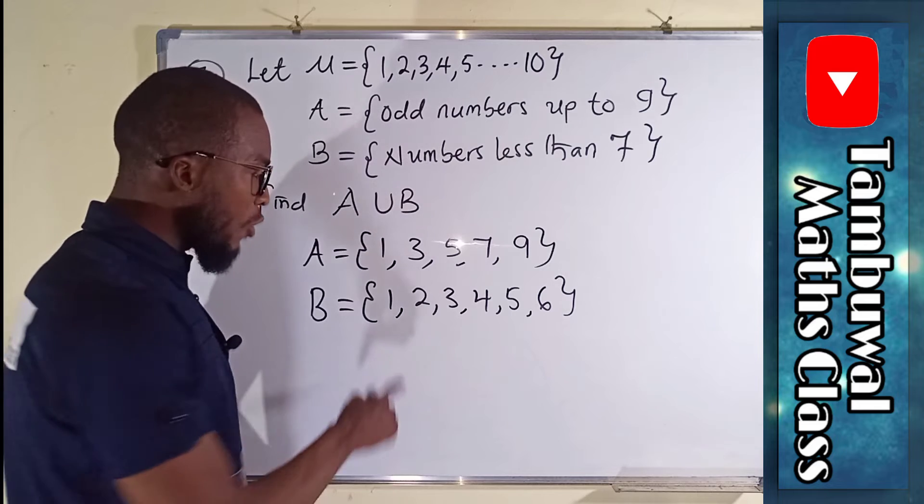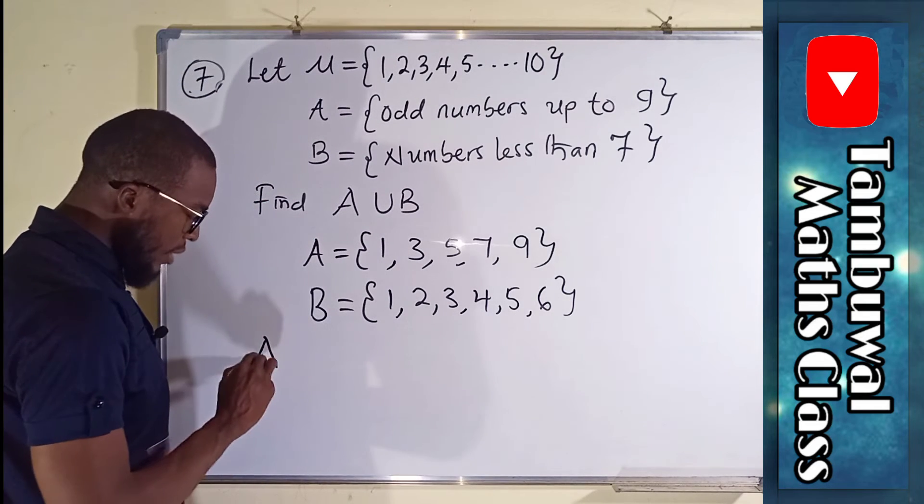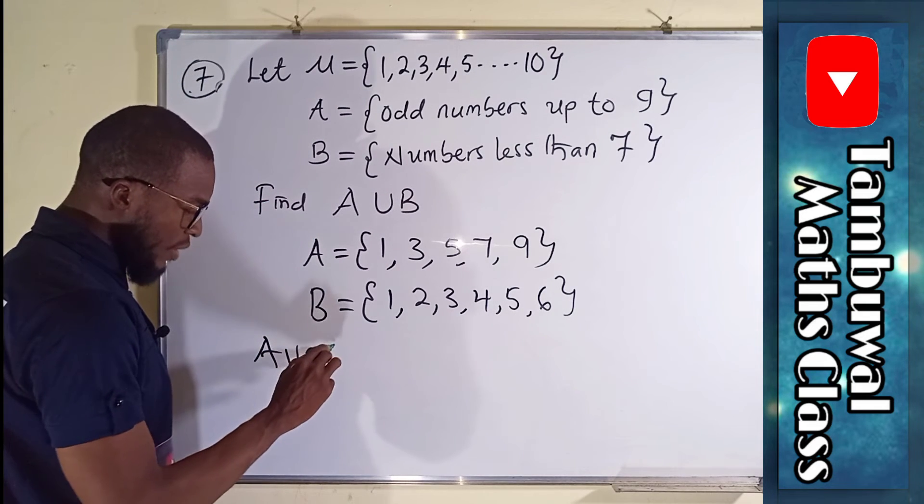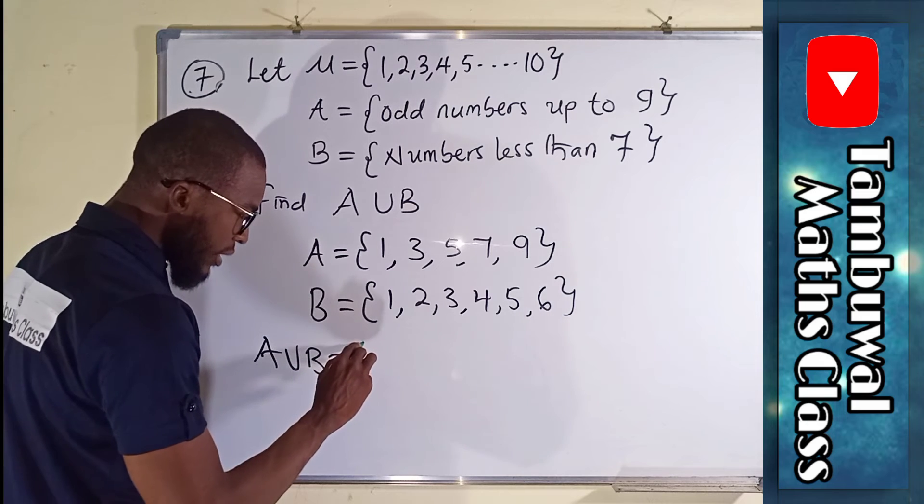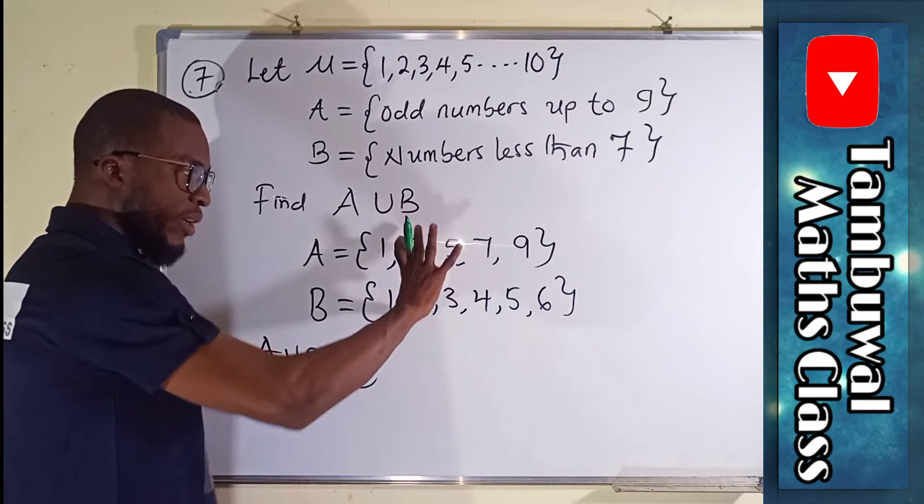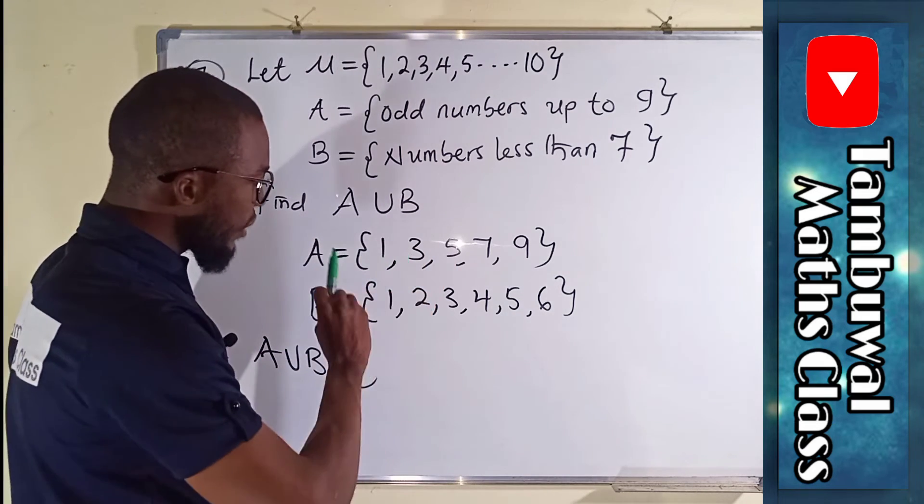All elements are separated by a comma. A union B, meaning we should form another set that comprises all the elements without repetition.